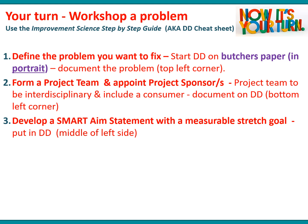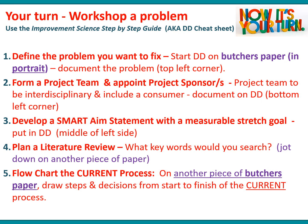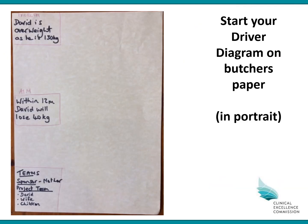Put your butcher's paper in portrait style and document the problem in the top left corner. Document the project team and project sponsor in the bottom left corner. Develop the SMART aim statement and place it in the middle of the left side. On a separate piece of paper, jot down the keywords for the literature review. On another piece of butcher's paper, document the current process — drawing all steps and decisions from start to finish. After completing steps one to three, your driver diagram on butcher's paper should be taking shape. Next, we'll talk about step six.